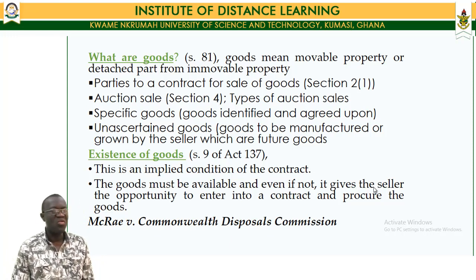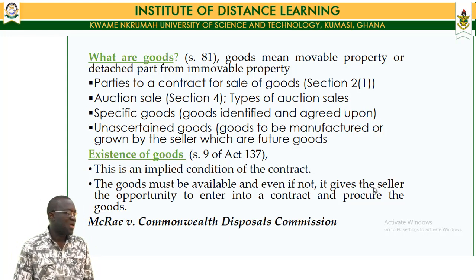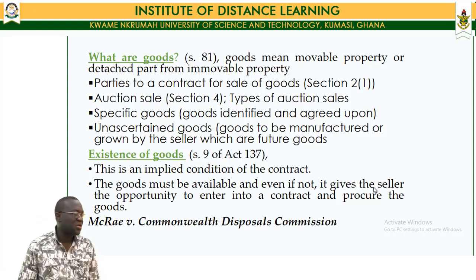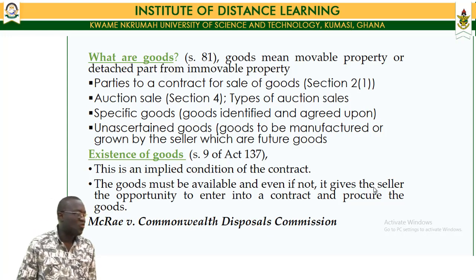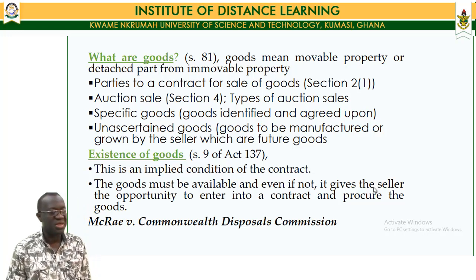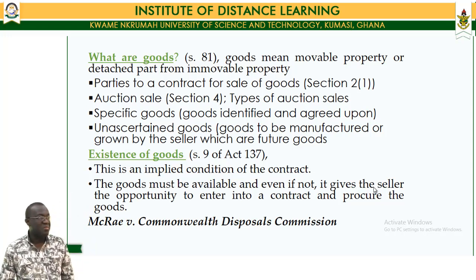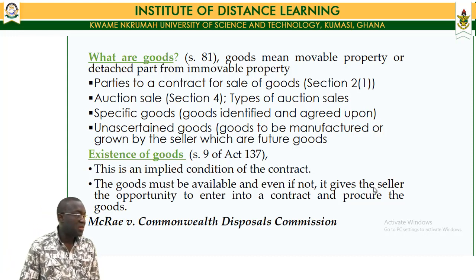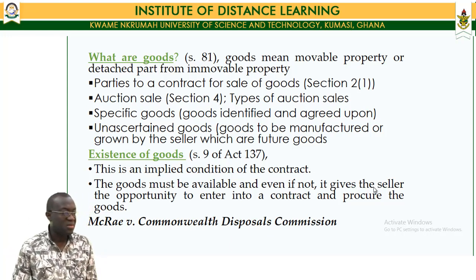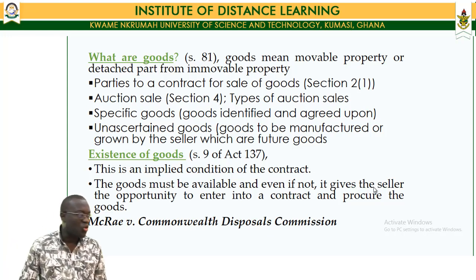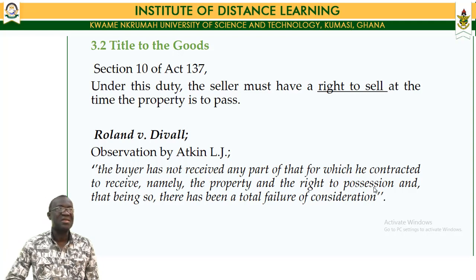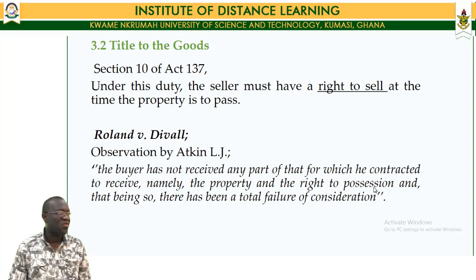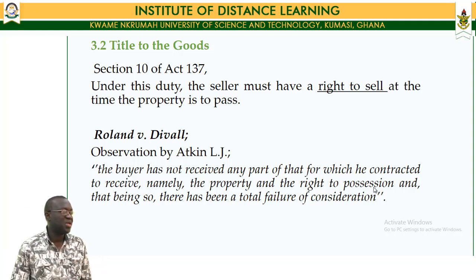The most important principle underlying transactions in goods is the existence of the goods. Before you can make a sale of goods, the goods must be in existence. This is an implied condition of the contract of sale of goods. The goods must be available, and even if not, the Act gives the seller the opportunity to enter into a contract and procure the goods — by a contract stating that future production of the goods will be delivered in the future.